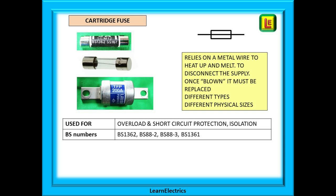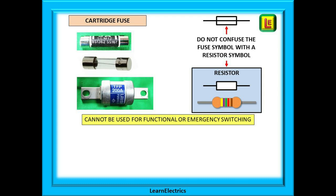Fuses can be used for overload and short circuit protection, and by removing the fuse they can also be used for isolation of the circuit. However, because it takes time to find a screwdriver or spanner to remove a fuse, they cannot be used for emergency switching or everyday on-off switching — what we call functional switching. Lastly, do not confuse the symbol for a fuse with that of a resistor as they do look a little similar.